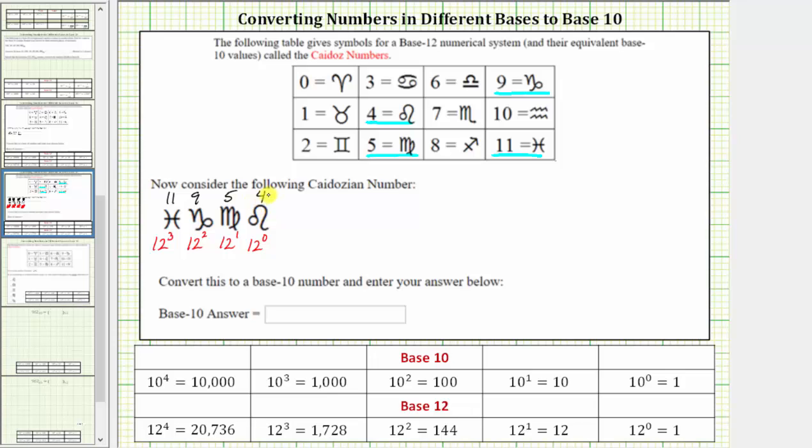And now to convert to base-10, we multiply these whole numbers by the place values and then sum the products. In base-10, this is equal to 11 times 12 to the third, plus 9 times 12 squared, plus 5 times 12 to the first, plus 4 times 12 to the zero.